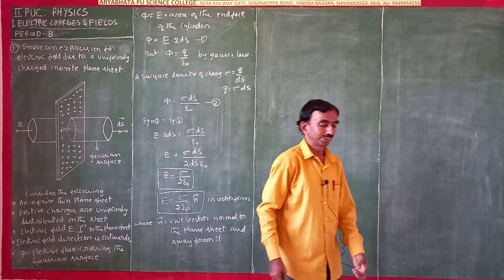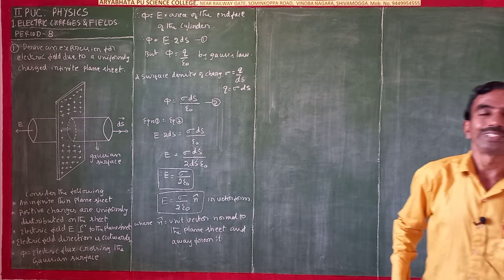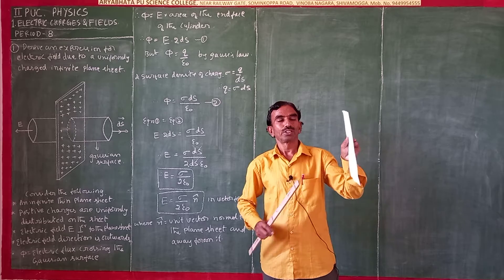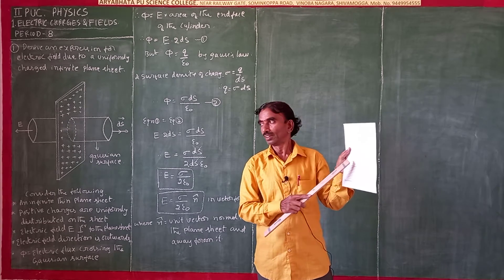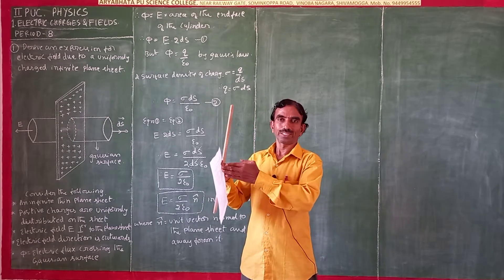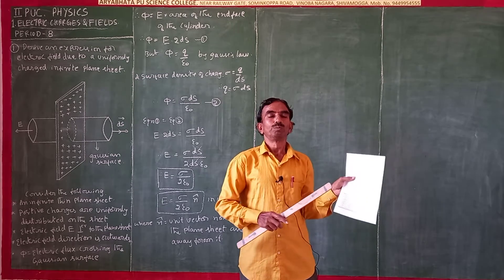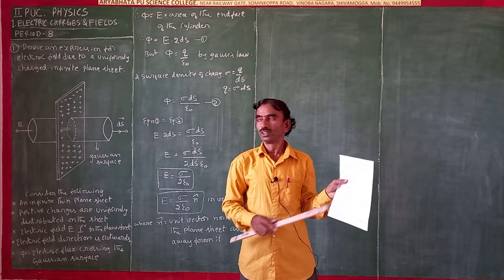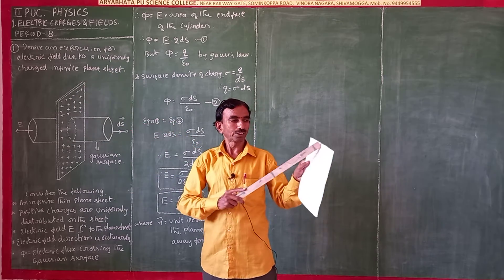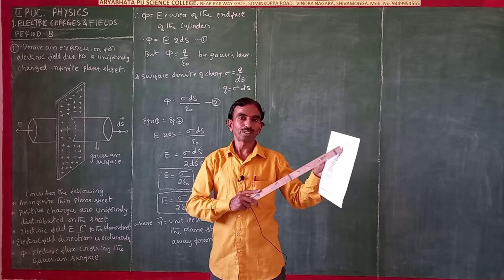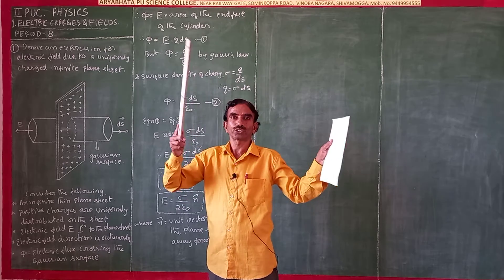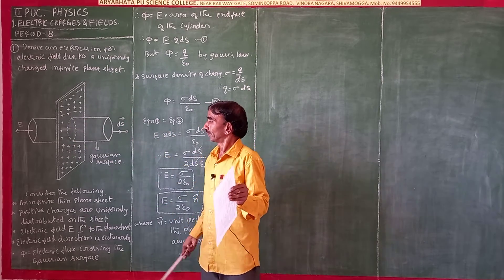There is an infinite plane sheet. Charges are all accumulated on this plane sheet, and we have to find out the electric field. The electric flux is crossing here, and in this small area we have to calculate how much electric field is there. The sheet is very, very large — it is an infinite plane sheet — and we have to find out the electric field.